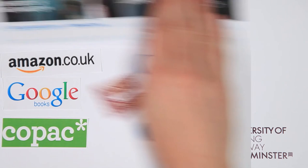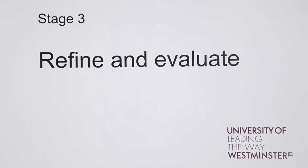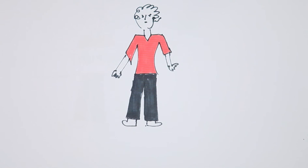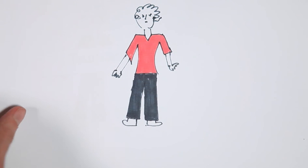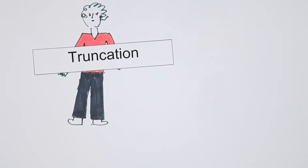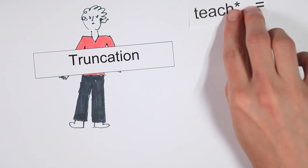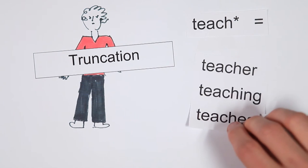Stage three, refine and evaluate. Dave may need to improve his search. There are some simple ways to do that. Truncation. This is the retrieval of all words with a common root using an asterisk.